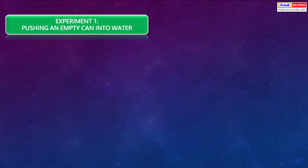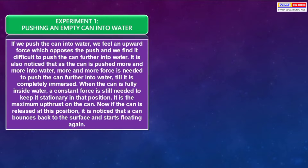Experiment 1: Pushing an empty can into water. If we push the can into water, we feel an upward force which opposes the push and we find it difficult to push the can further into water. As the can is pushed more and more into water, more and more force is needed until it is completely immersed. When fully inside, a constant force is still needed to keep it stationary — this is the maximum upthrust on the can. If the can is released, it bounces back to the surface and starts floating again.